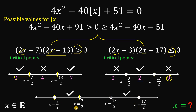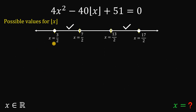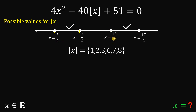From the interval 1.5 up to 3.5, the floor value of x can be 1, 2, or 3. From the interval 6.5 up to 8.5, the floor value of x can be 6, 7, or 8. Since we have 6 possible values for the floor value of x, let's check all of those cases to see if we get a real value for x.